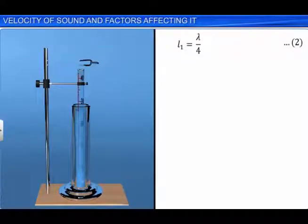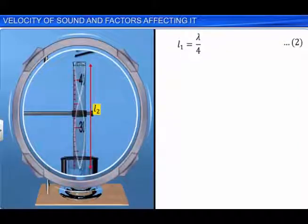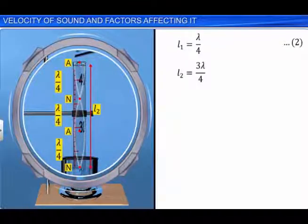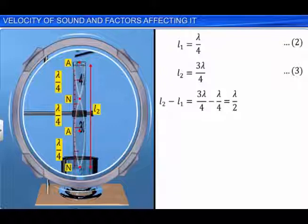The vibrating tuning fork is held near the open end of the tube again, and the tube is further raised in steps of millimeters until a second booming sound is heard corresponding to resonance. The length of the air column is now noted as L2. Now the stationary wave formation in the air column is such that it vibrates with two nodes and two antinodes, an antinode at the open end and a node at the closed end. Now we see that the length of the air column L2 is equal to 3 lambda by 4. Let this be Equation 3. Then L2 minus L1 is equal to 3 lambda by 4 minus lambda by 4, which is equal to lambda by 2. Or we can write lambda is equal to 2 times L2 minus L1. Let this be Equation 4.